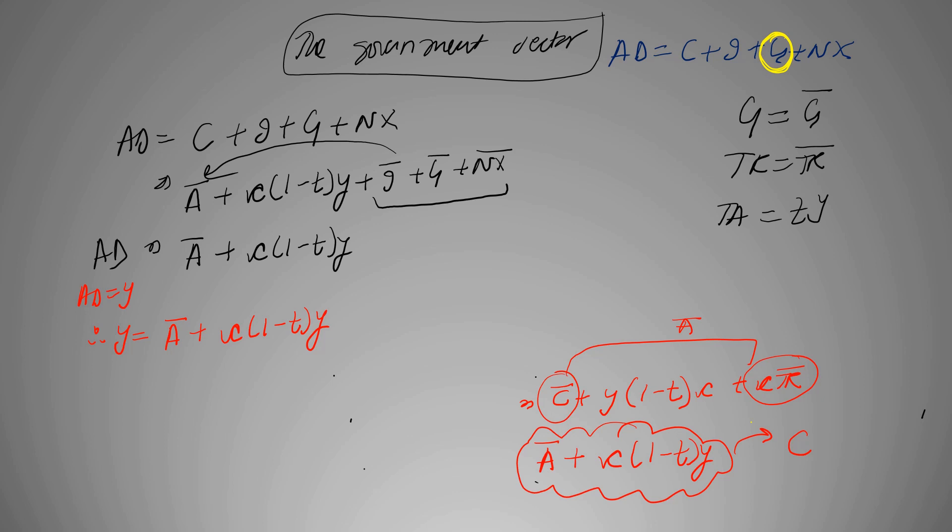Now we can further simplify it by bringing this term on our left hand side. We can take Y common. It can be 1 minus C(1 minus T) is equal to autonomous A. Therefore Y is equal to A divided by 1 minus C(1 minus T). And this is our equilibrium output in presence of government sector.